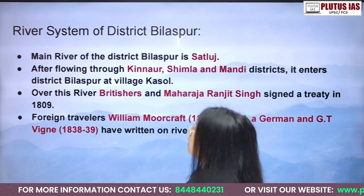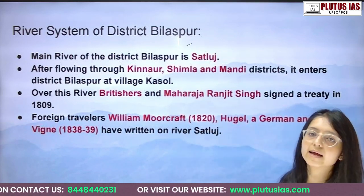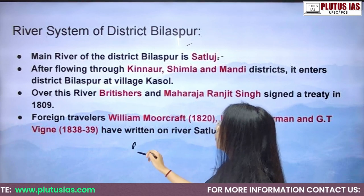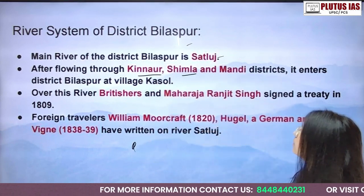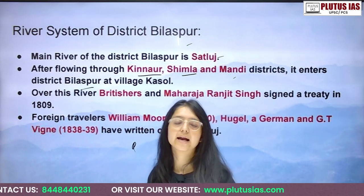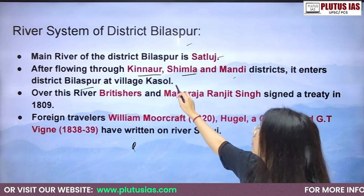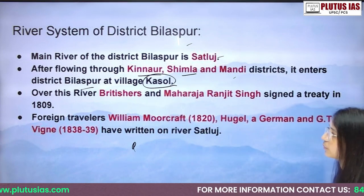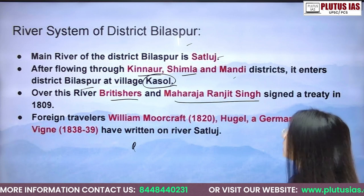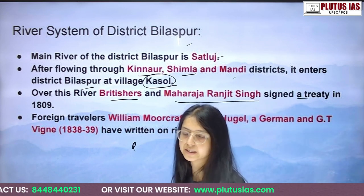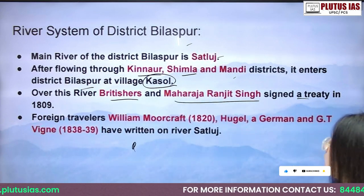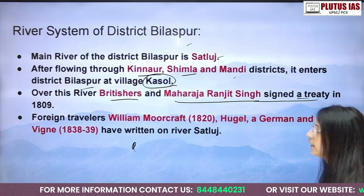The main river of Bilaspur is the Satluj River. It originates in the Raksha Tal area, then enters Shimla, then Mandi, and finally enters Bilaspur at the place called Kassol. The Britishers and Maharaja Ranjit Singh signed the Treaty of Amritsar on 23 March 1809, using this river as a boundary.